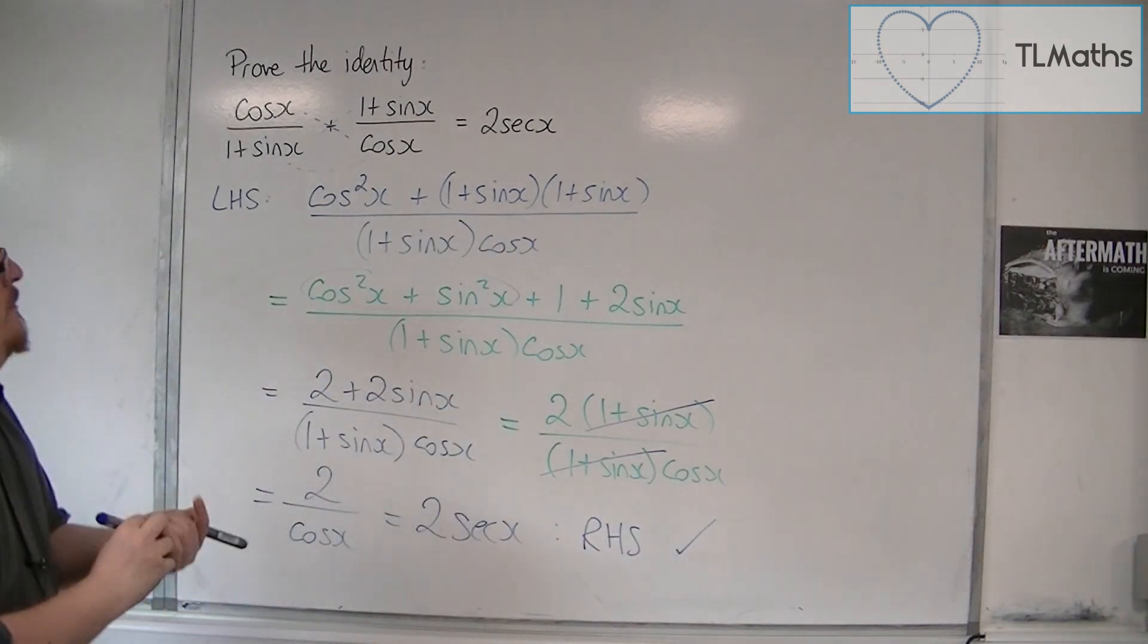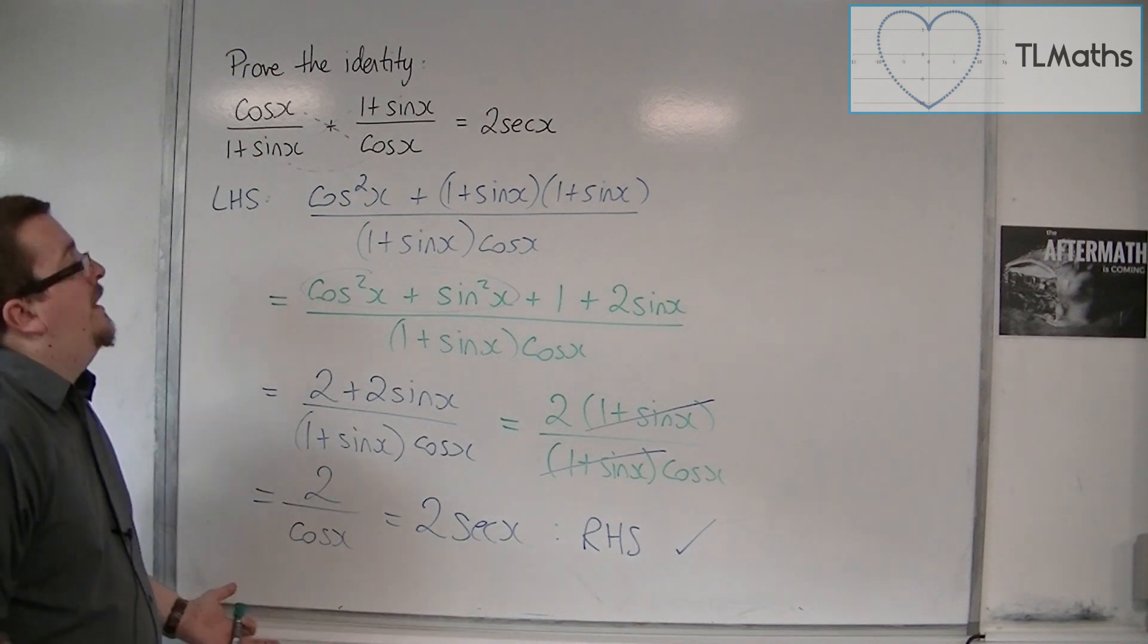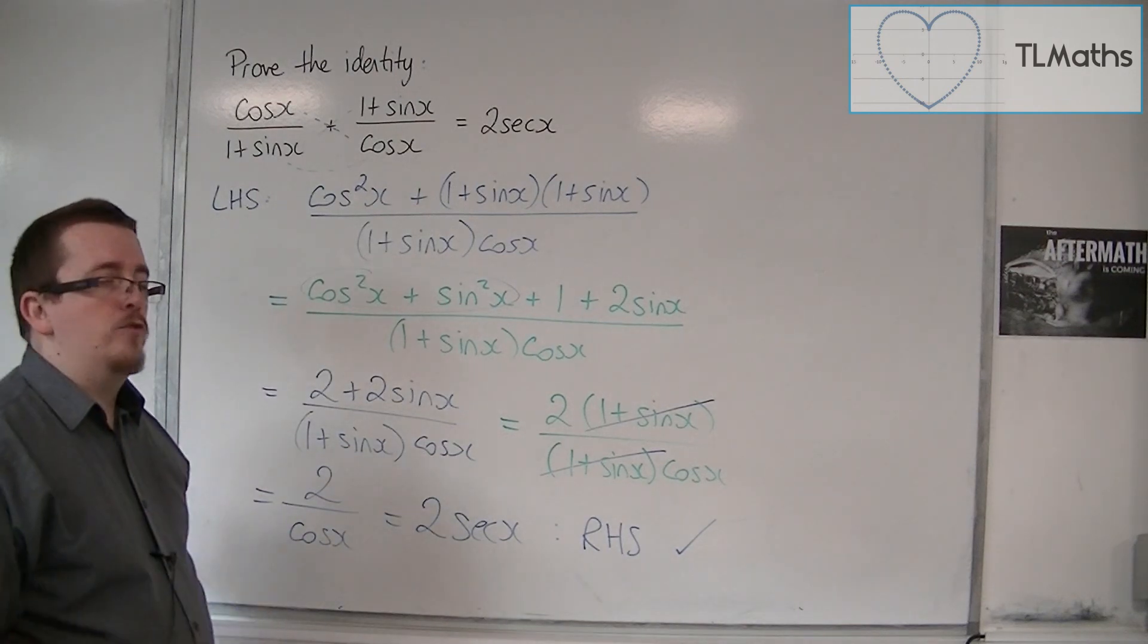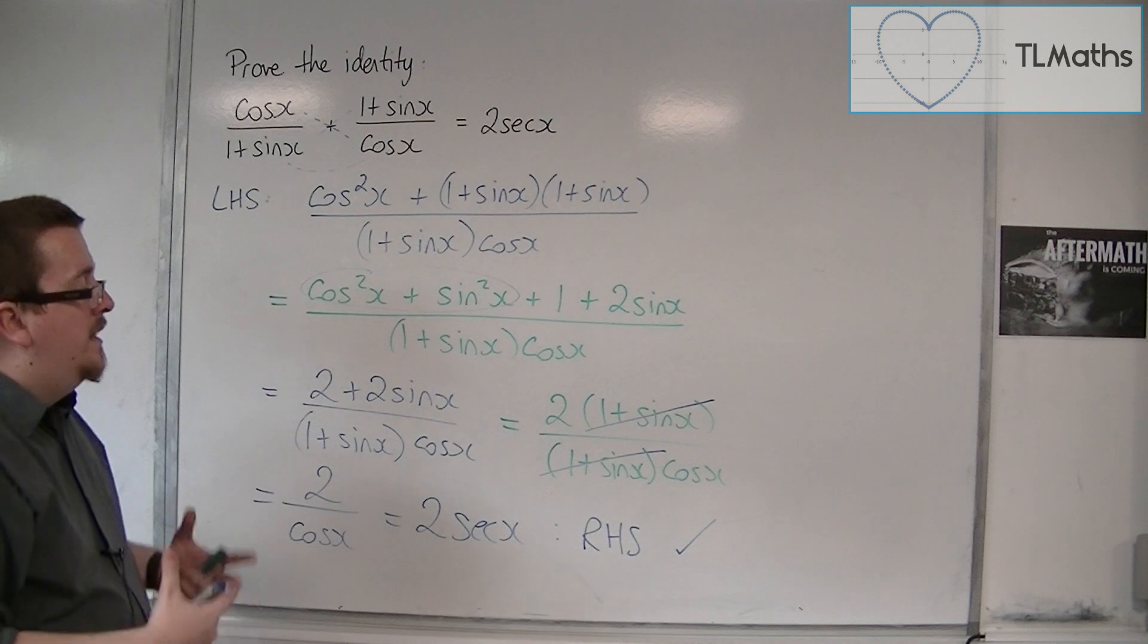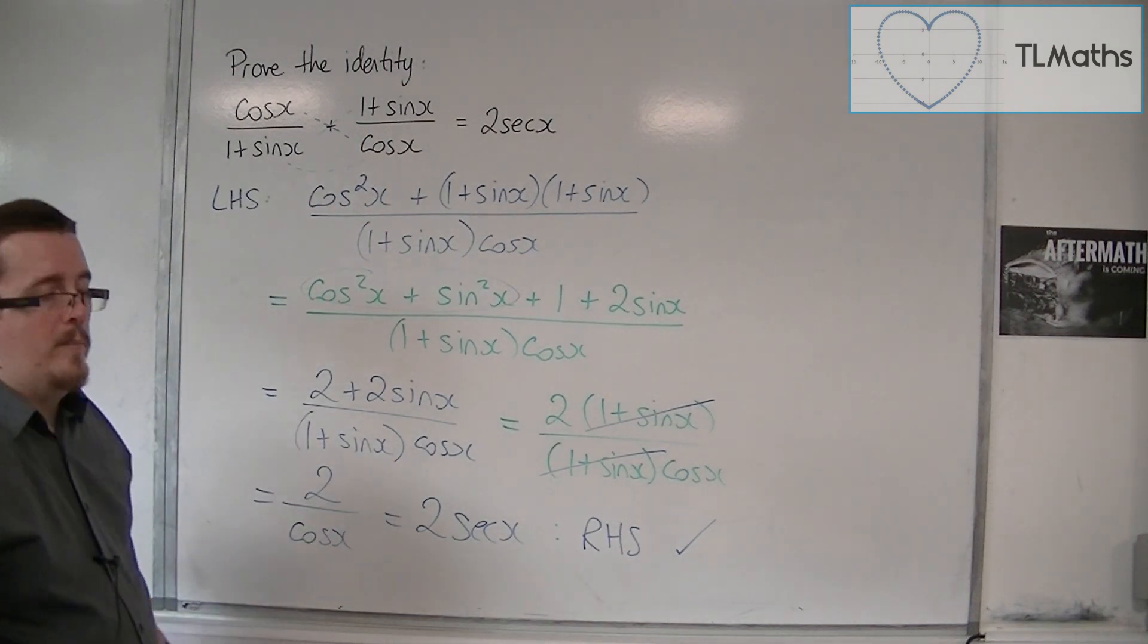So I've managed to get from the left-hand side to the right-hand side. The real difficulties here are just making sure you get your algebraic fractions, adding of algebraic fractions correct, and then spotting the trig identity. But from there on, it's reasonably straightforward.